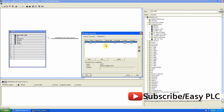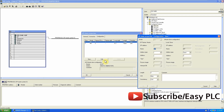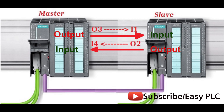We have to add partner memory addresses, which are the addresses of the master CPU. The slave address configuration is on the right side and the partner master configuration is on the left side. One important thing to understand: the input of the master CPU is the output of the slave CPU and vice versa. Whatever data we write to the output address of the master CPU will go to the input address of the slave CPU via Profibus.